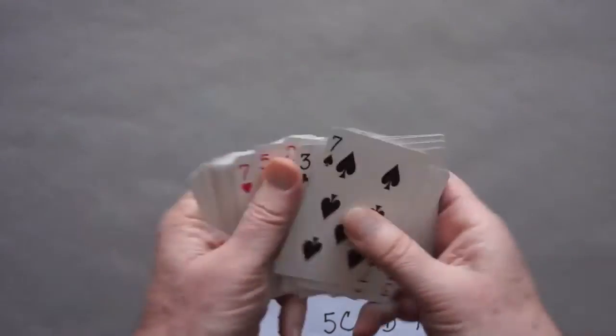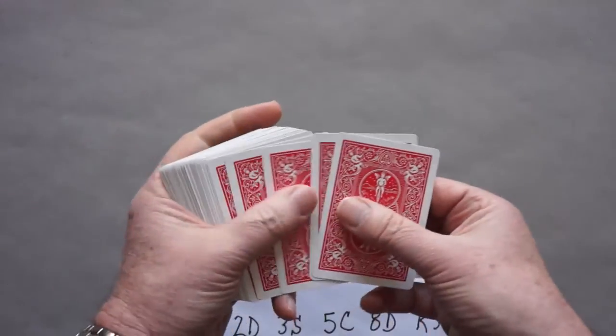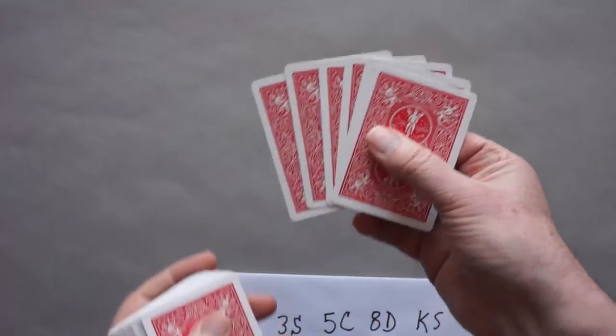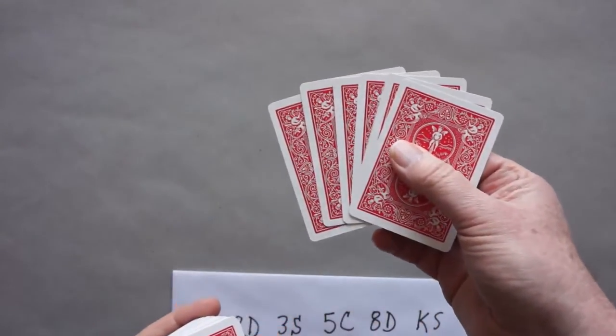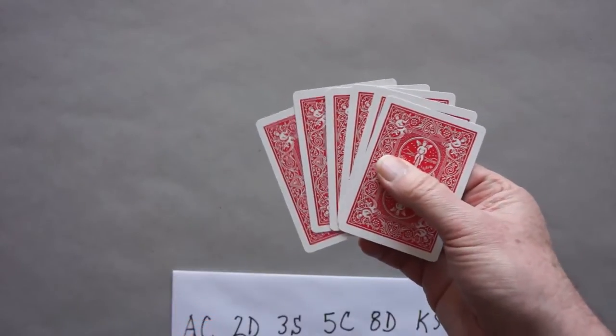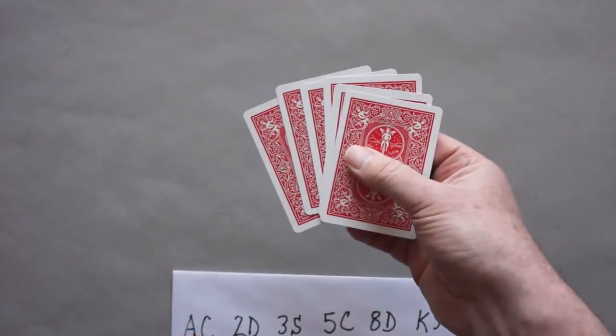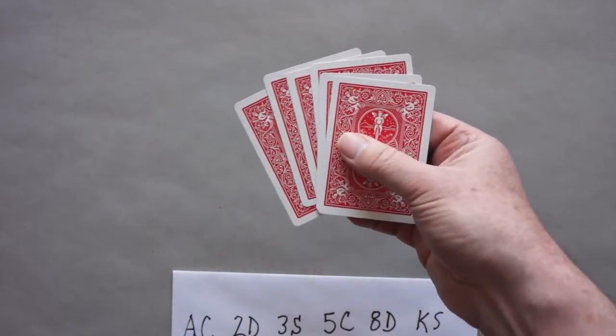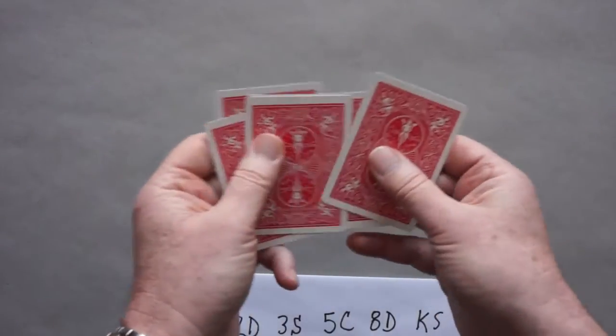So we say, all right, I've mixed them up a little bit. Here, take some cards, and I hand them to the spectators. I don't even mention that there are 6 cards, so it sounds like I've just picked a bunch of cards. So I hand those to the spectators, and I say, mix them up.